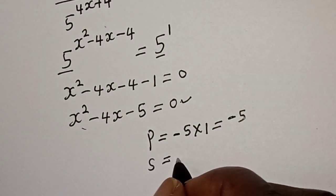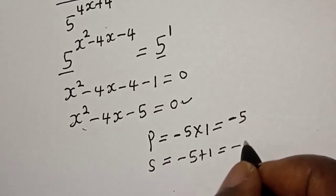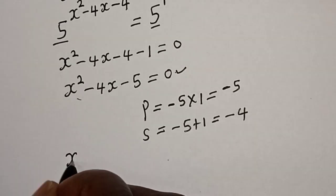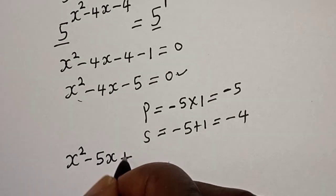This is equal to minus 5 plus 1 equals minus 4. So let's substitute here. We have s squared minus 5s plus...